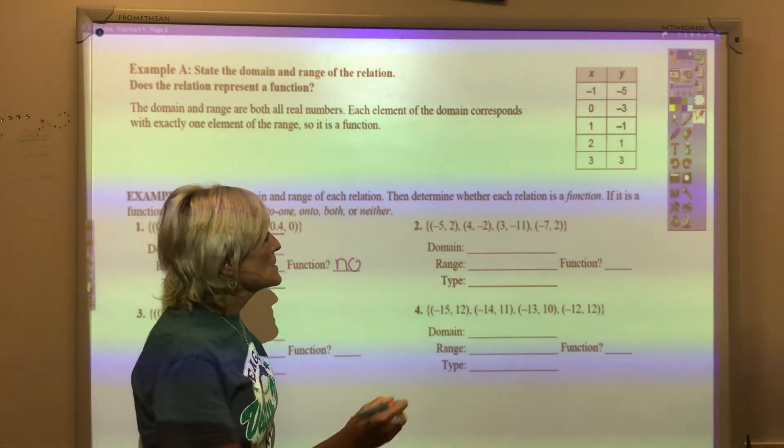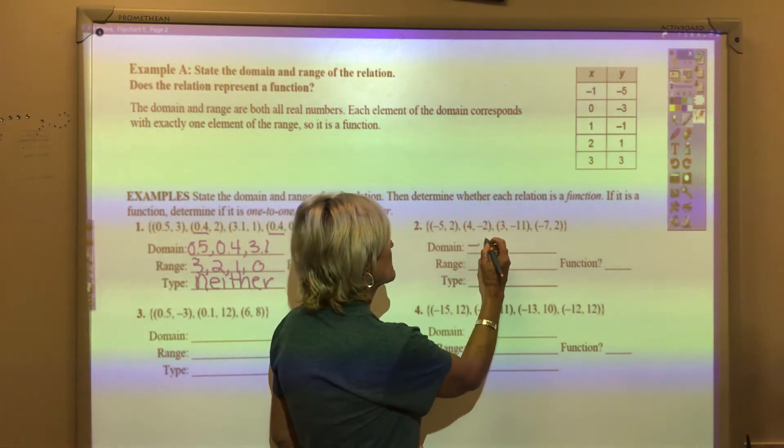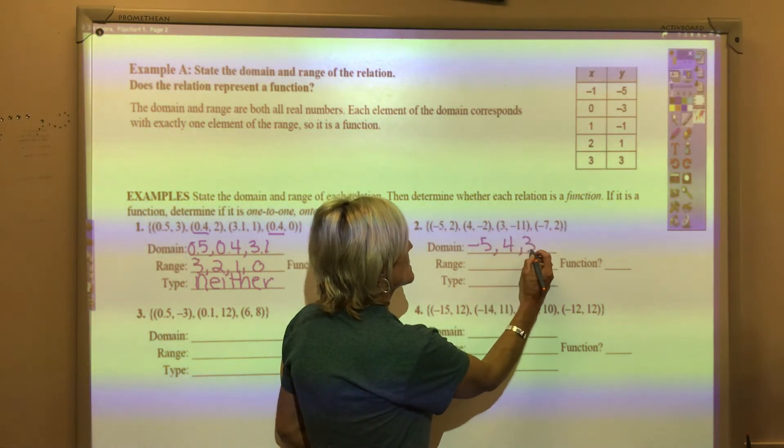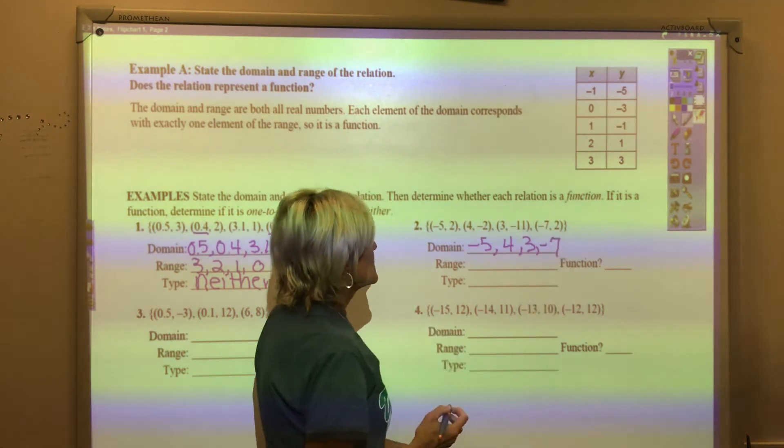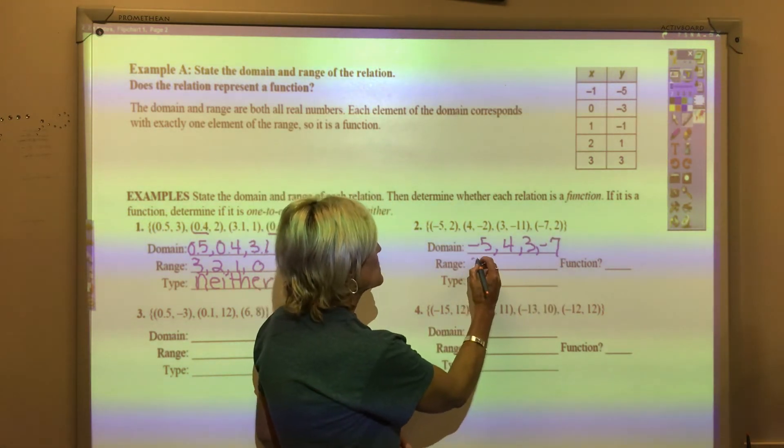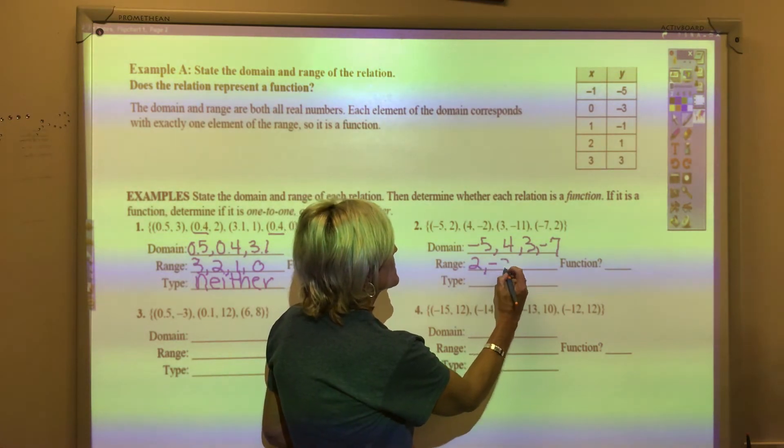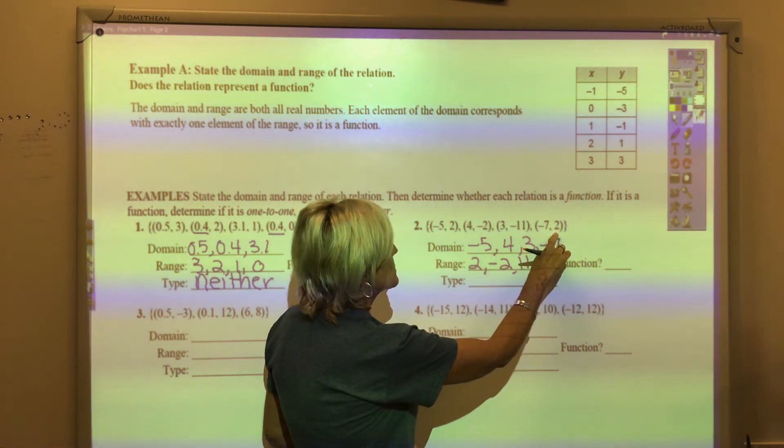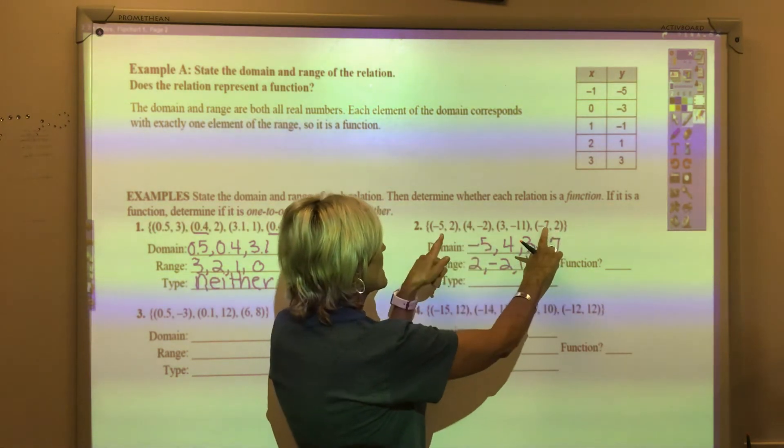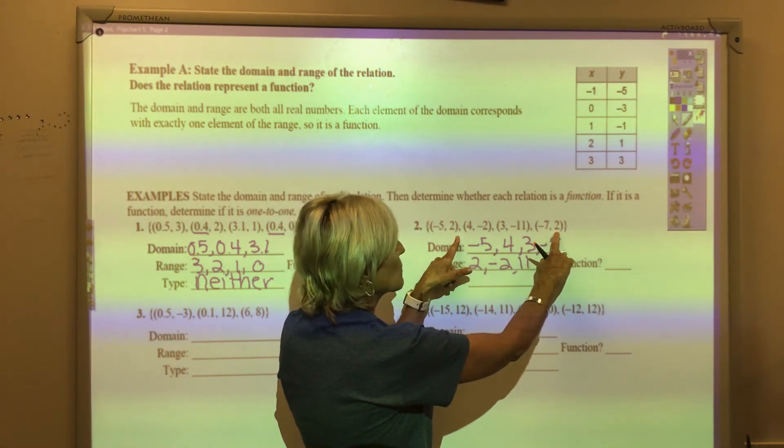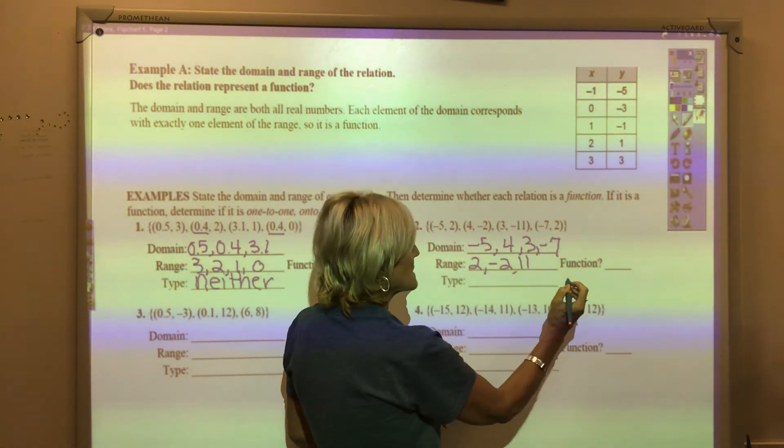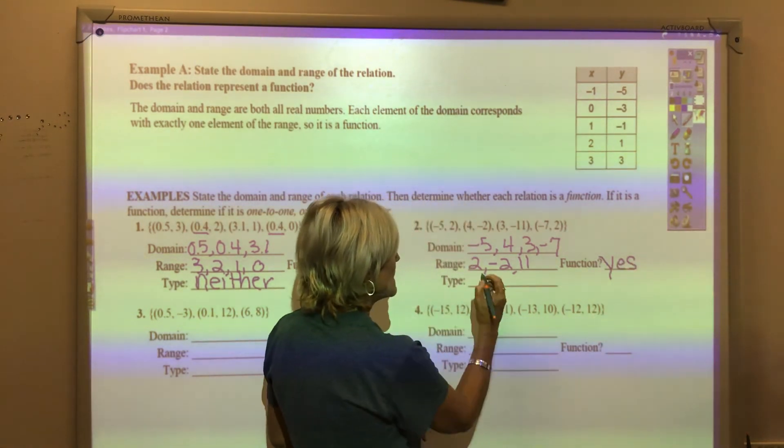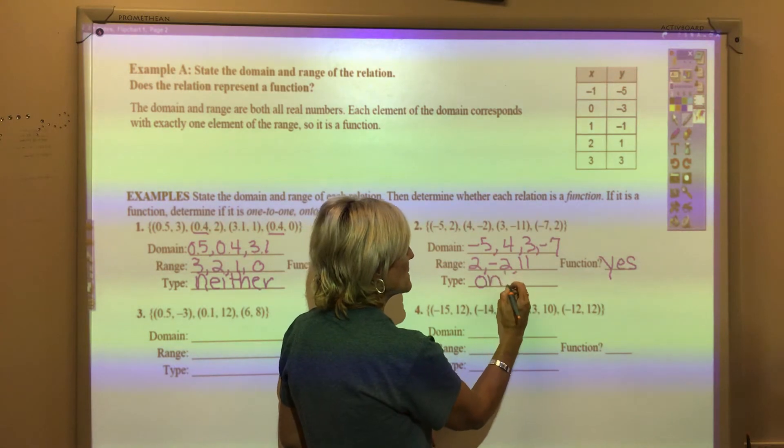On number 2, the domain is negative 5, 4, 3, and negative 7. The range is 2, negative 2, 11. And see how we have another 2? So 2 x's are going onto one y. That is a function, because x didn't repeat, and this is an onto type of function.